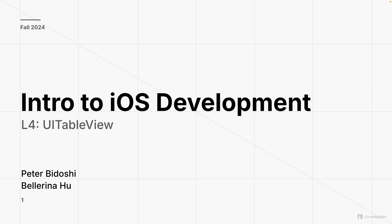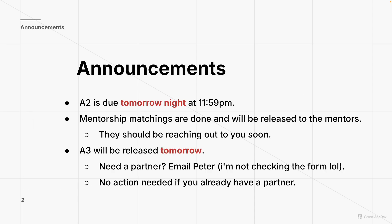Real quick before we get started, just a reminder that A2 is due tomorrow. Make sure that instead of submitting your files directly on CMS this time, just follow the instructions in the handout on the website. You should be submitting something called submission.txt that has your net ID and then the GitHub repository link. Please don't zip up your files. Just make sure you guys start switching over to the submission.txt.